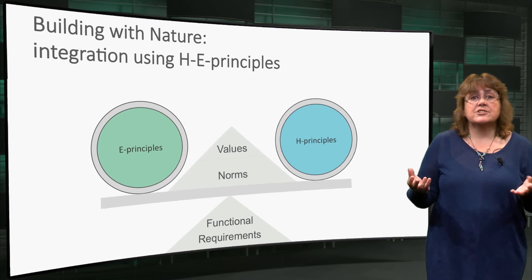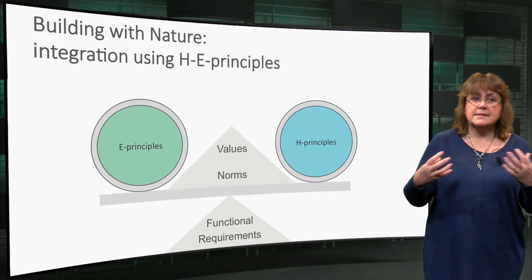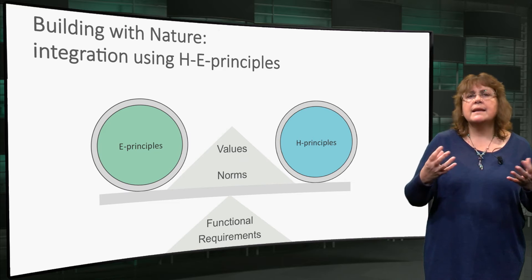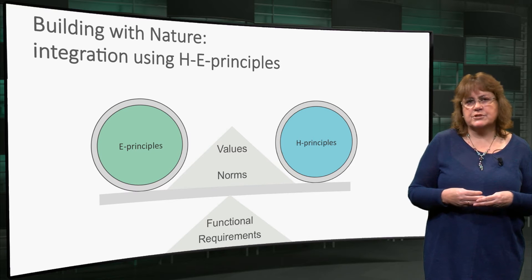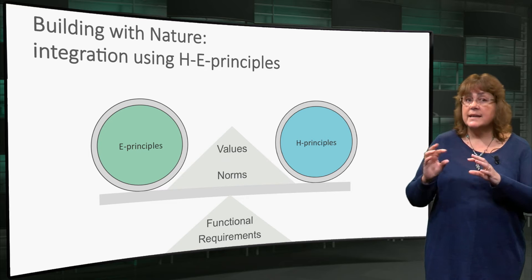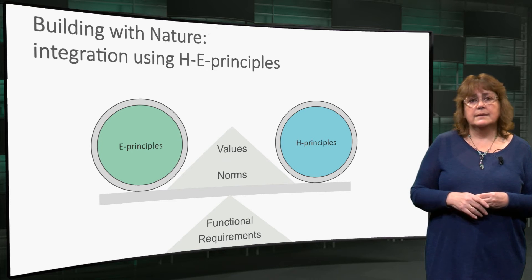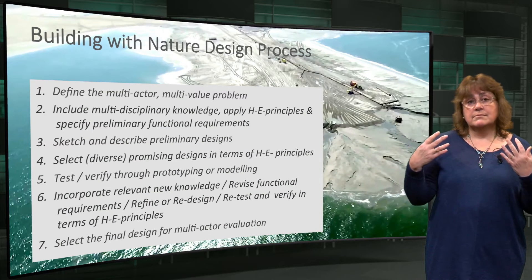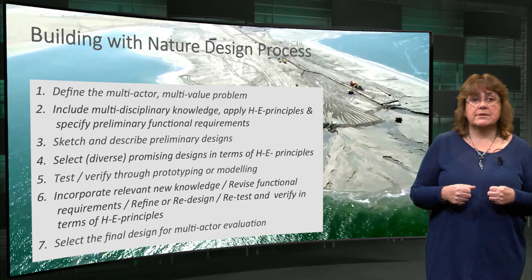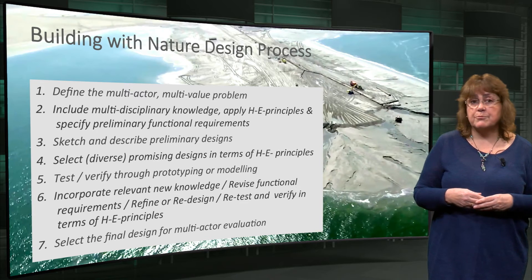Building with nature aims to use natural materials, forces and interactions to balance hydraulic infrastructural interventions and the needs and health of ecosystems, as far as possible. Just like the conventional engineering design process, the building with nature design process has seven steps in an iterative process.